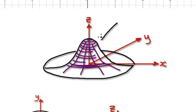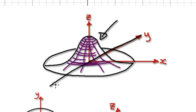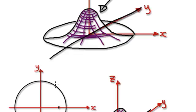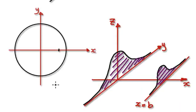If you imagine having a 3D solid here, and getting a knife and cutting it along the Y-axis, you will get a cross-sectional area of this.